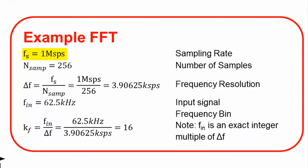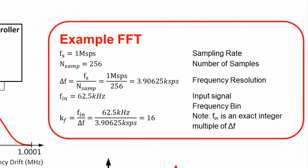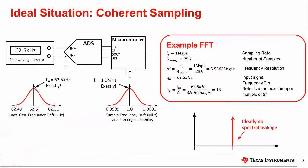Here, the sampling rate is 1 mega-sample per second, and 256 samples are taken. This information is used to find the frequency resolution. The input frequency is 62.5 kilohertz, so dividing the input frequency by the frequency resolution shows that the frequency bin is the exact integer 16. Since the input frequency is an exact integer multiple of the frequency resolution, we have no spectral leakage. This is called coherent sampling.